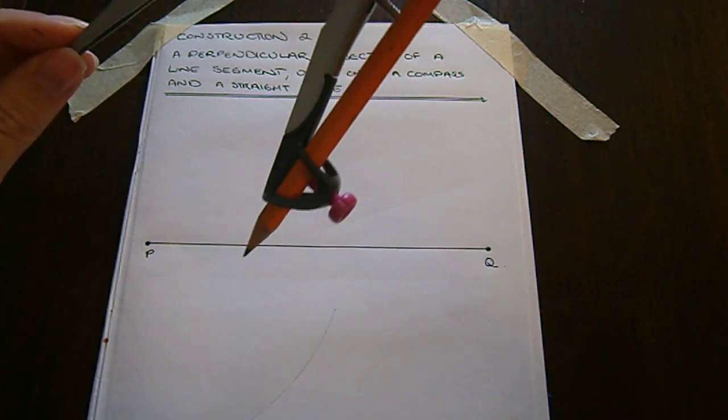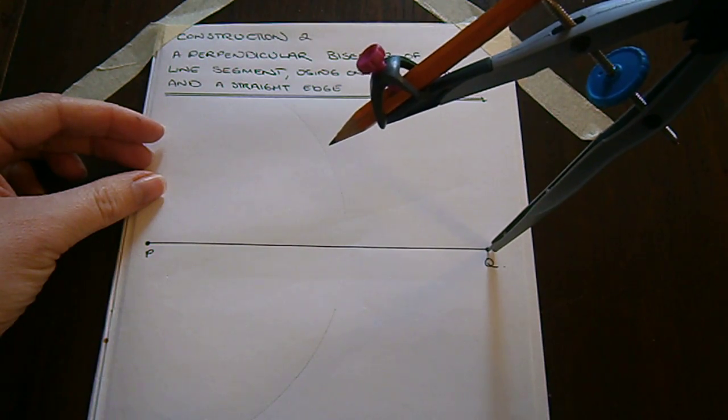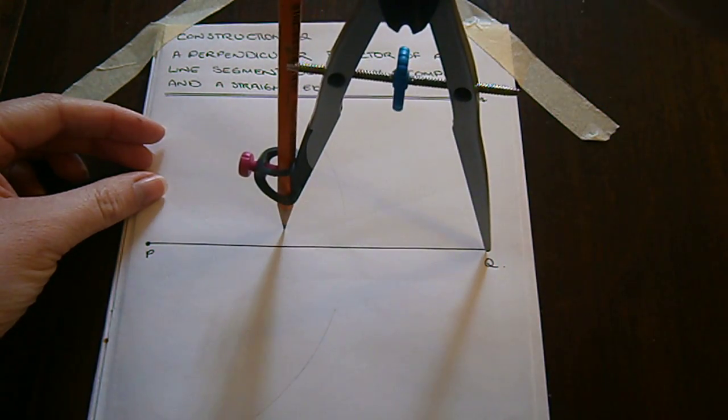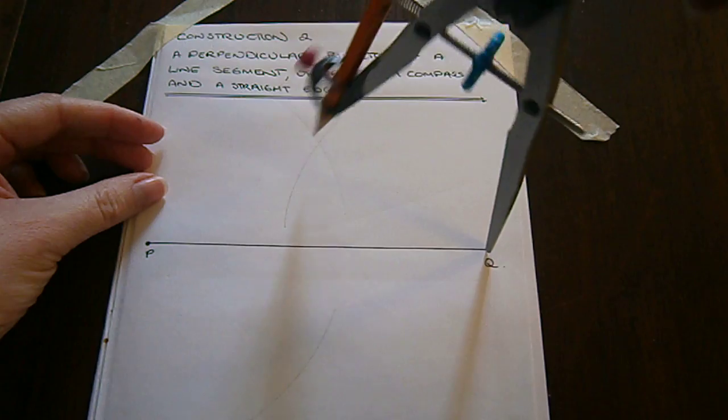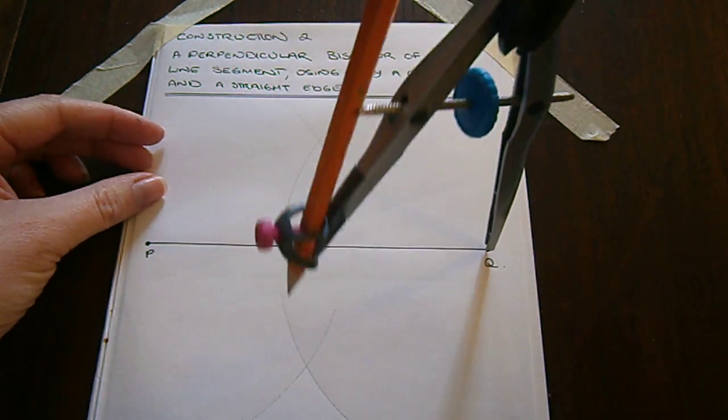We then keep the compass at the same width and put our point on Q. Swing an arc on either side of the line again. Nice clear arcs. There we go.